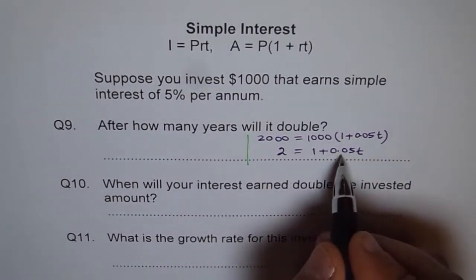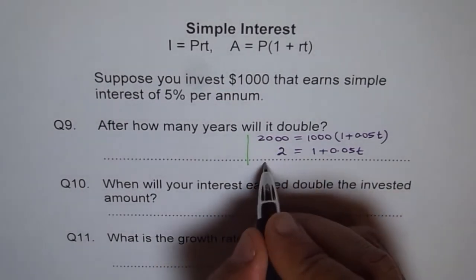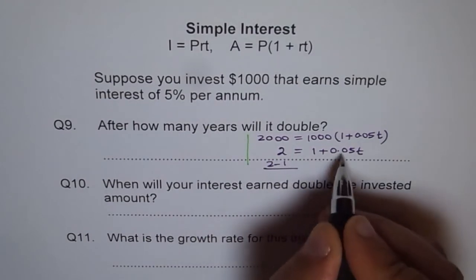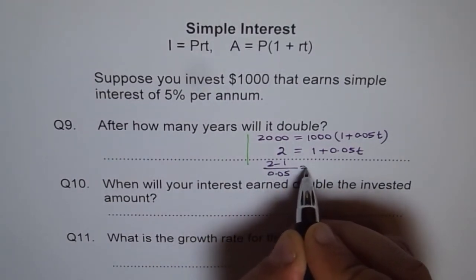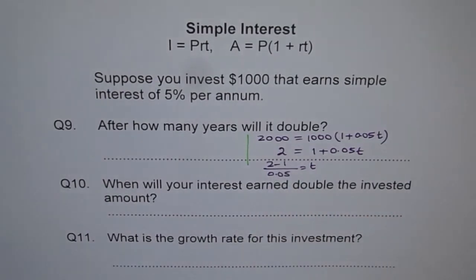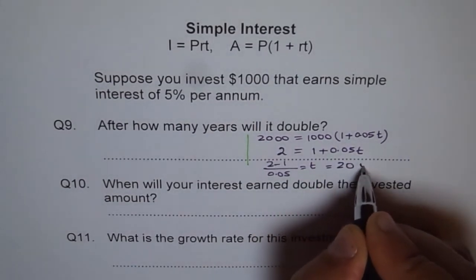Now you take away one and then divide by 0.05. So two minus one gives one, then you divide by 0.05 to get T. One divided by 0.05 gives twenty. So we get a time of twenty years.